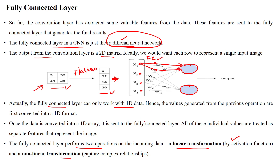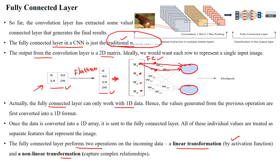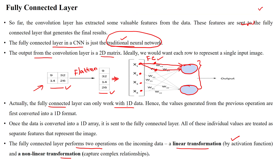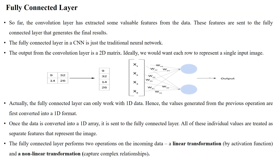As per our diagram, we have two fully connected layers, and finally we send the result to the output layer. The output layer has two neurons, so it is binary class classification. Finally, you get the output using a classifier — sigmoid for binary class classification or softmax for multi-class classification.